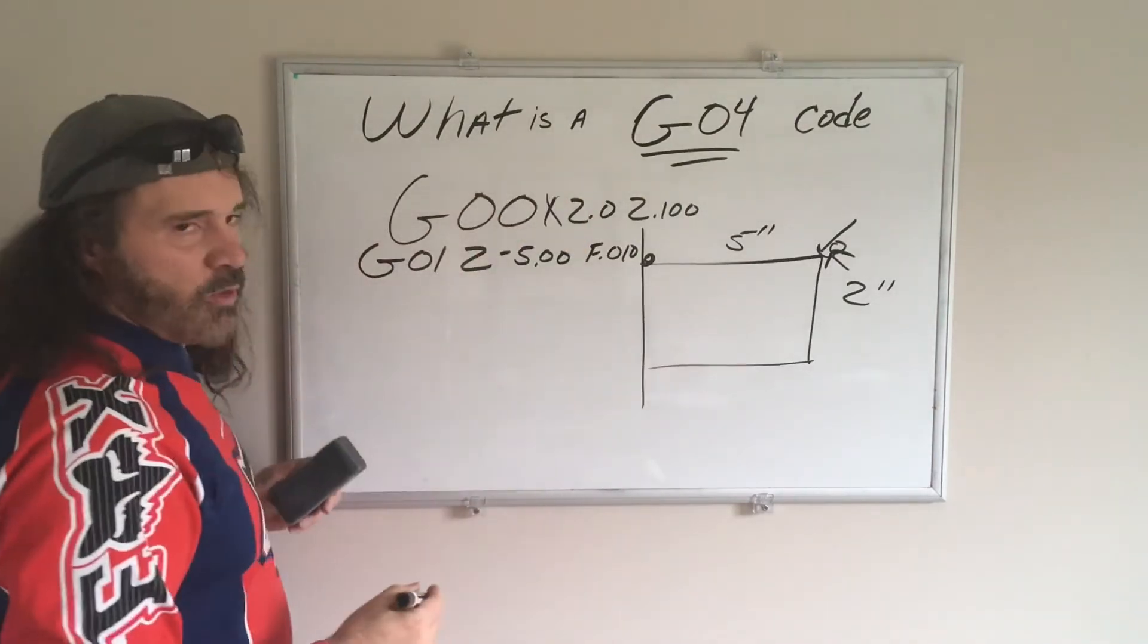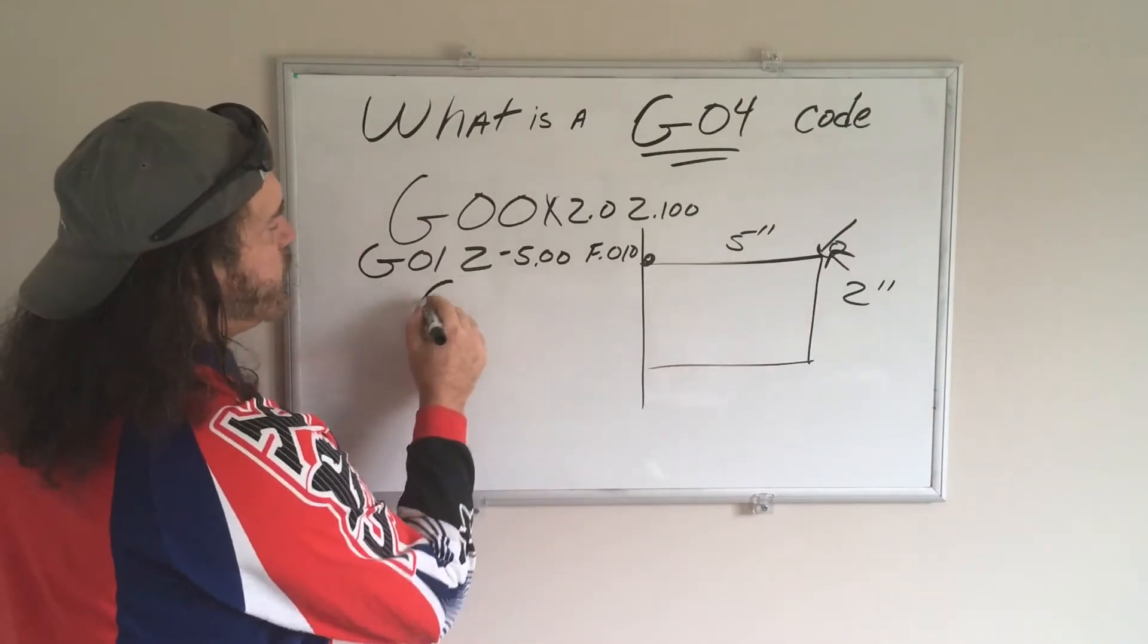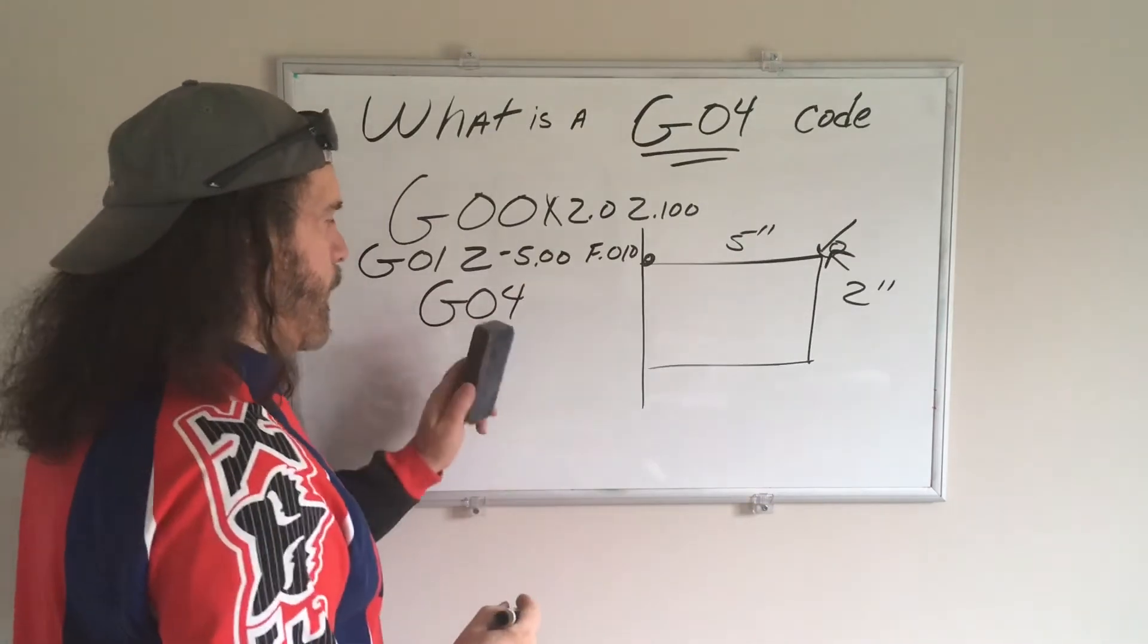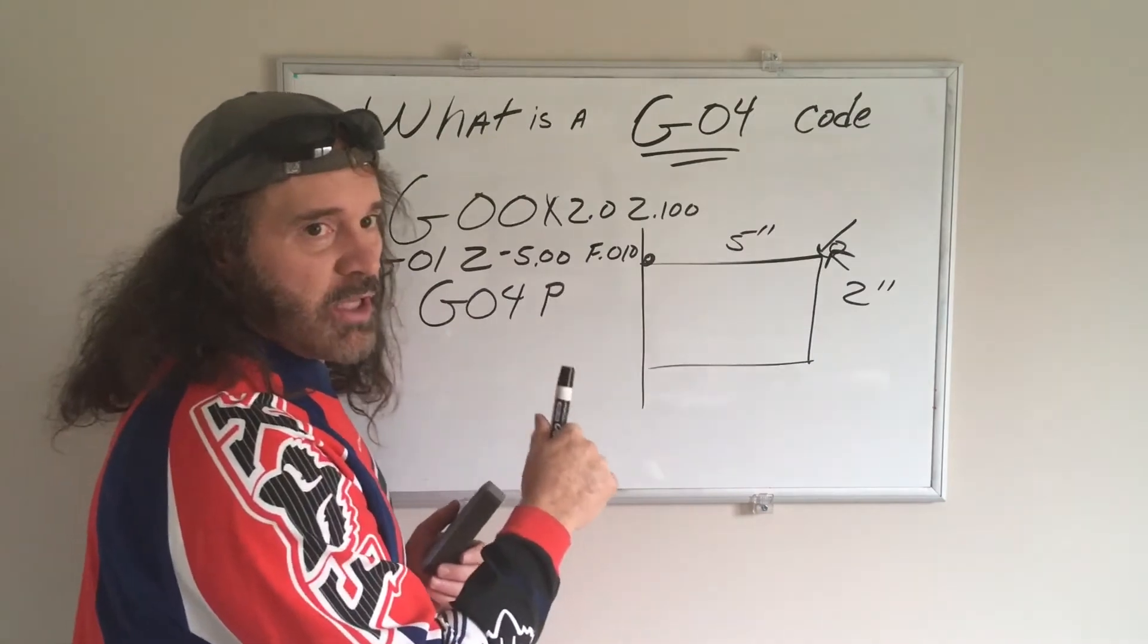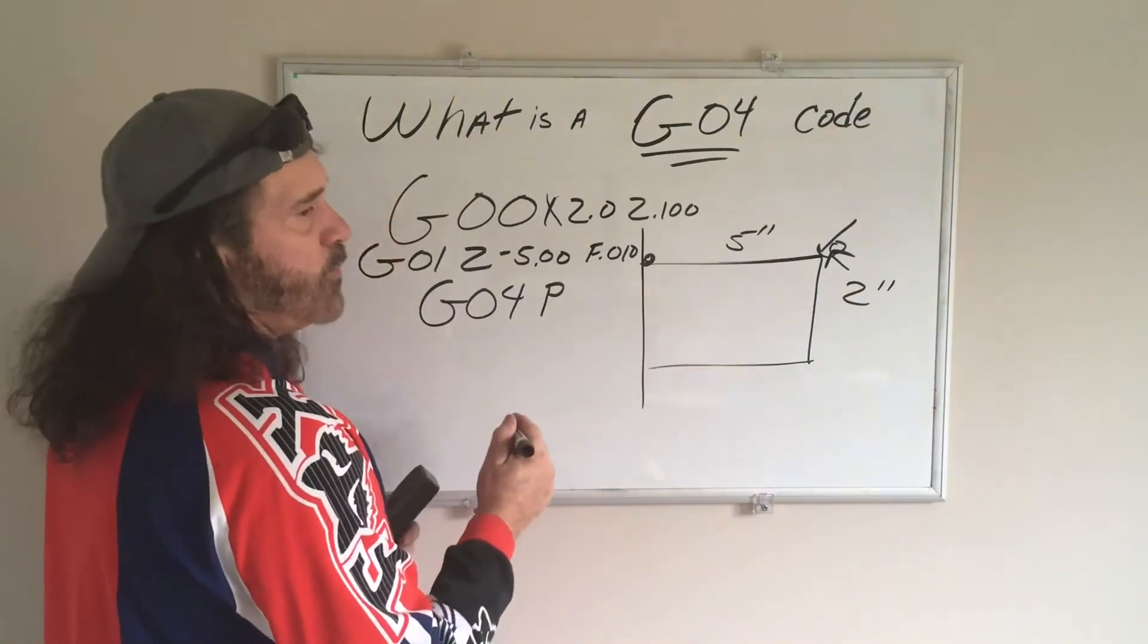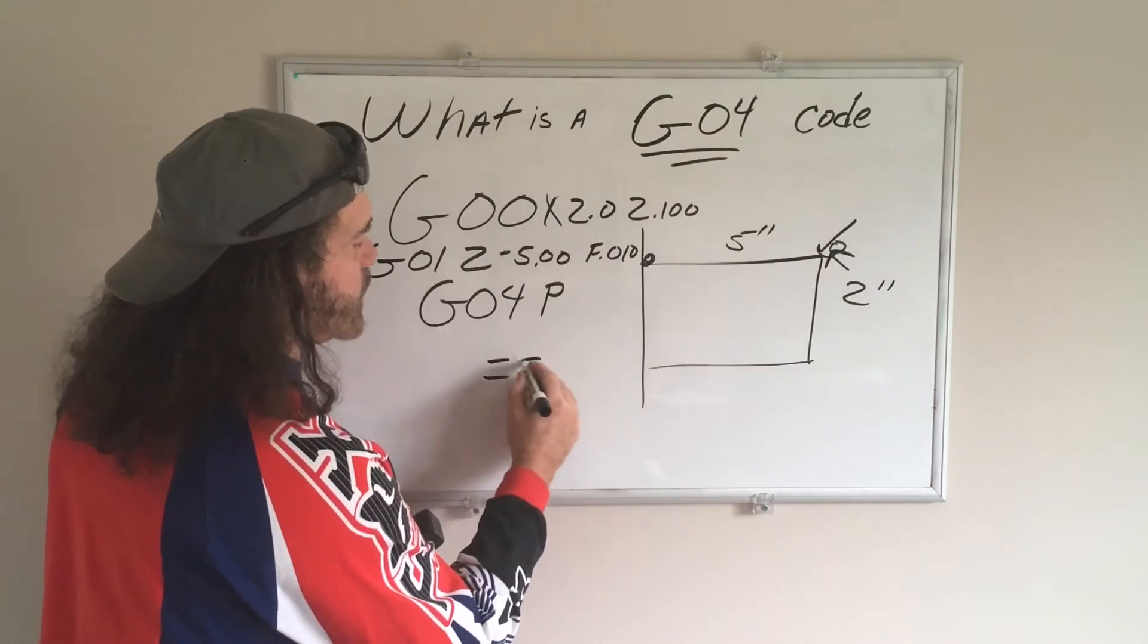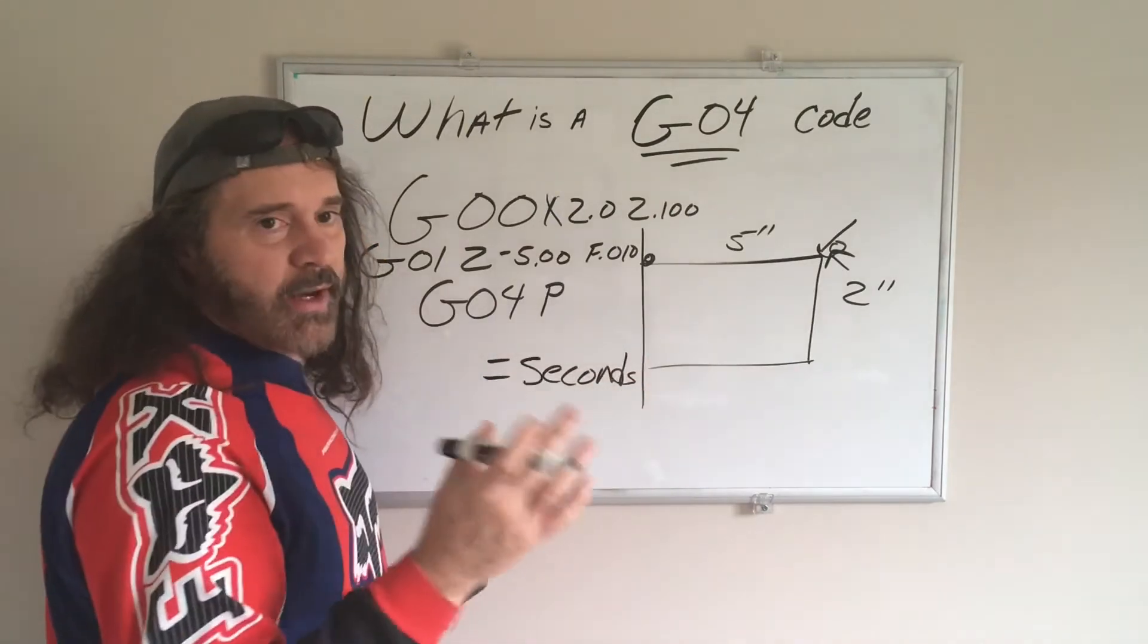This is where the G04 comes into play. So now, say I want it to sit there for a minute, G04, now how long do you want it to sit there? So, we want to give it a P code. The P value equals your seconds that you want to stay there.